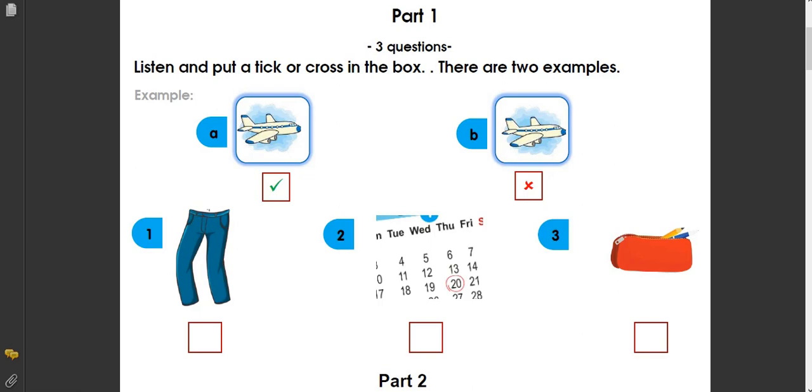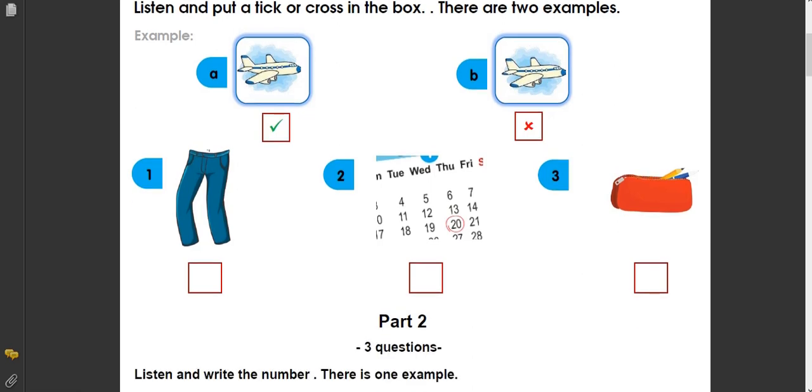B. Can you see the plane? No, I can't. Can you see the answer? Now, listen and tick or cross.